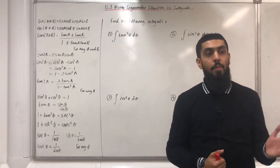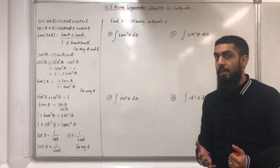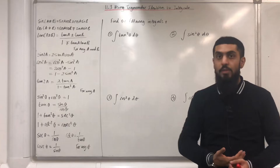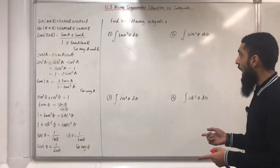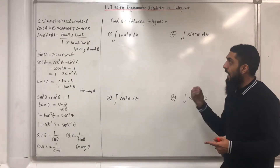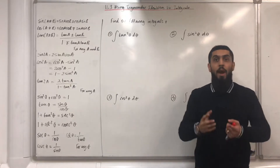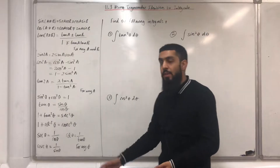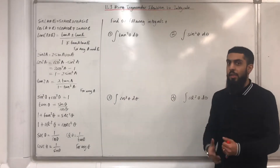If you go back to my videos 11.1 and 11.2, I went through integrals of standard functions and how to use these to integrate some simple expressions. Over here, I've got four different integrals up on the board. Each of these integrals cannot be integrated at the moment, but what I can do is use a trigonometric identity to rewrite each of them in a form that can be integrated.